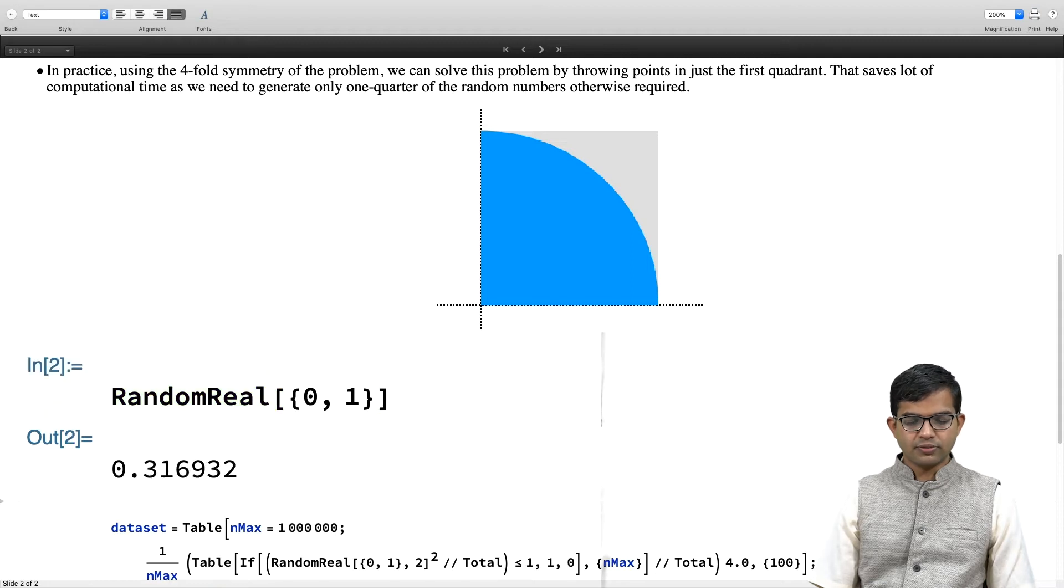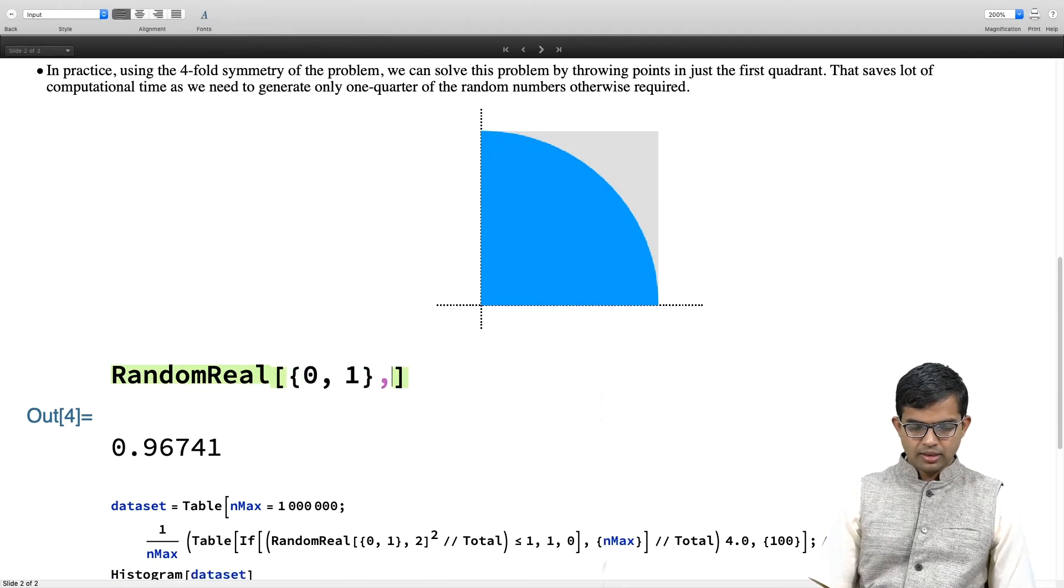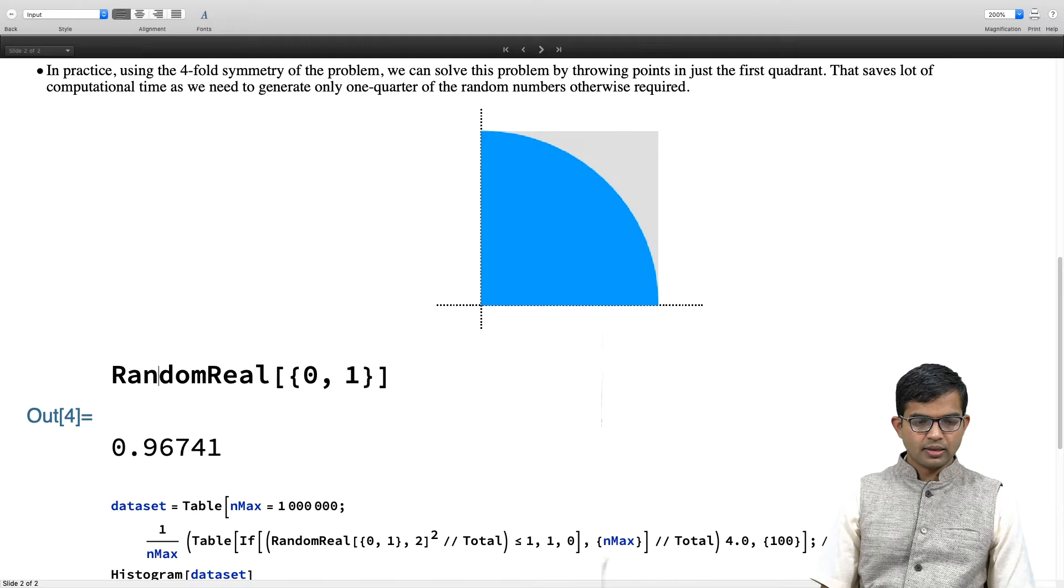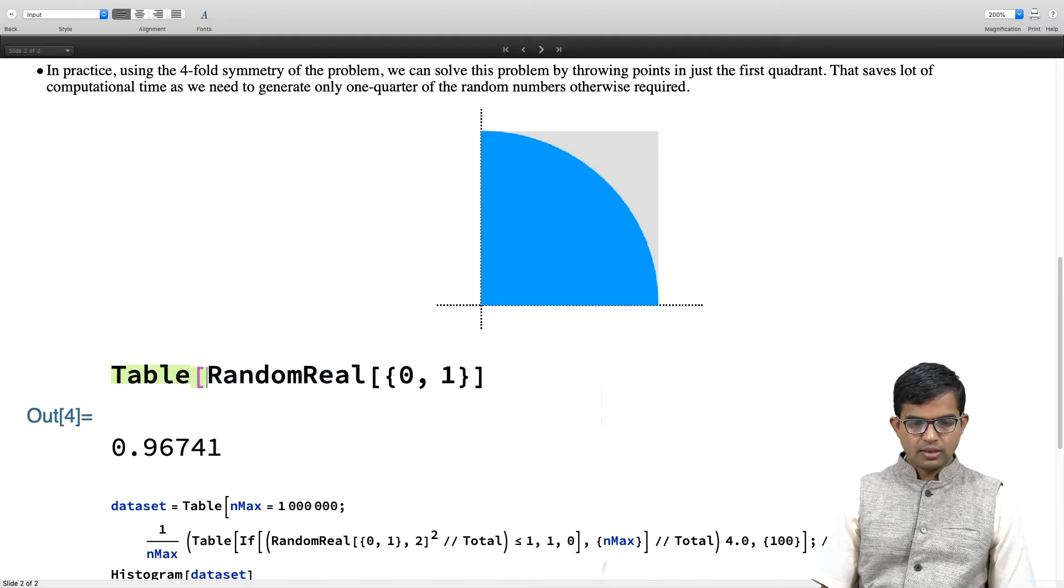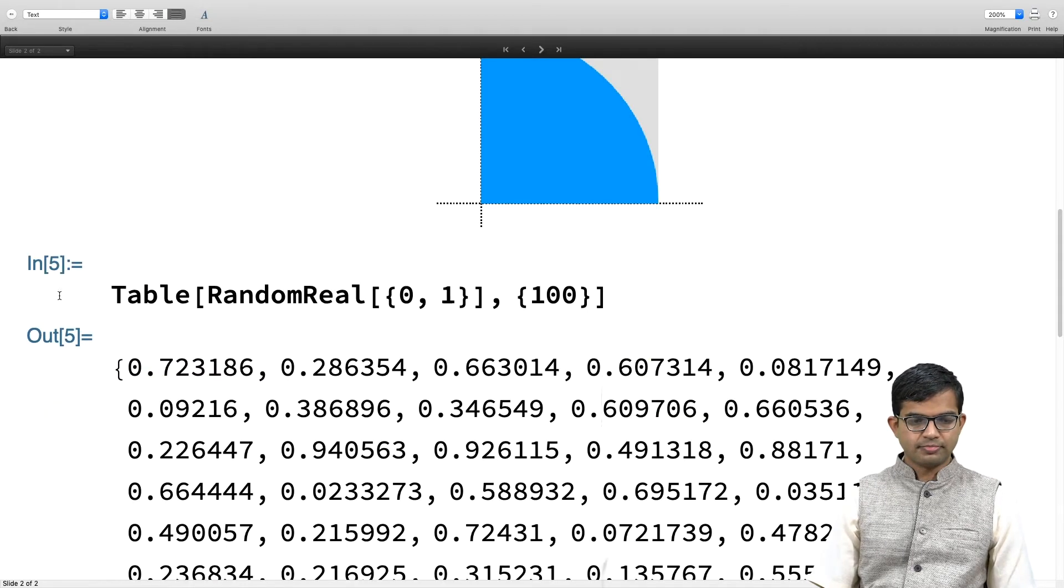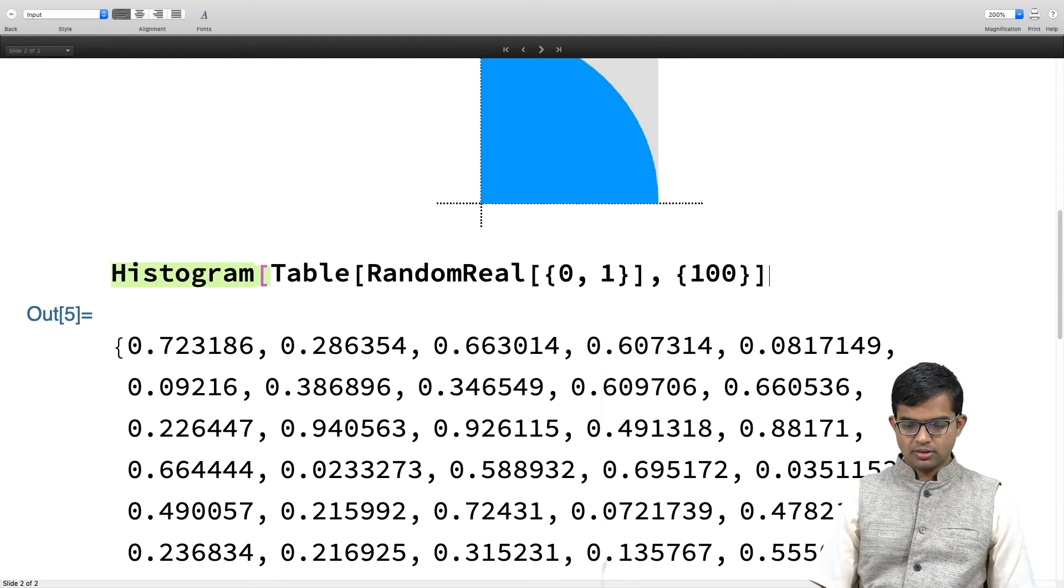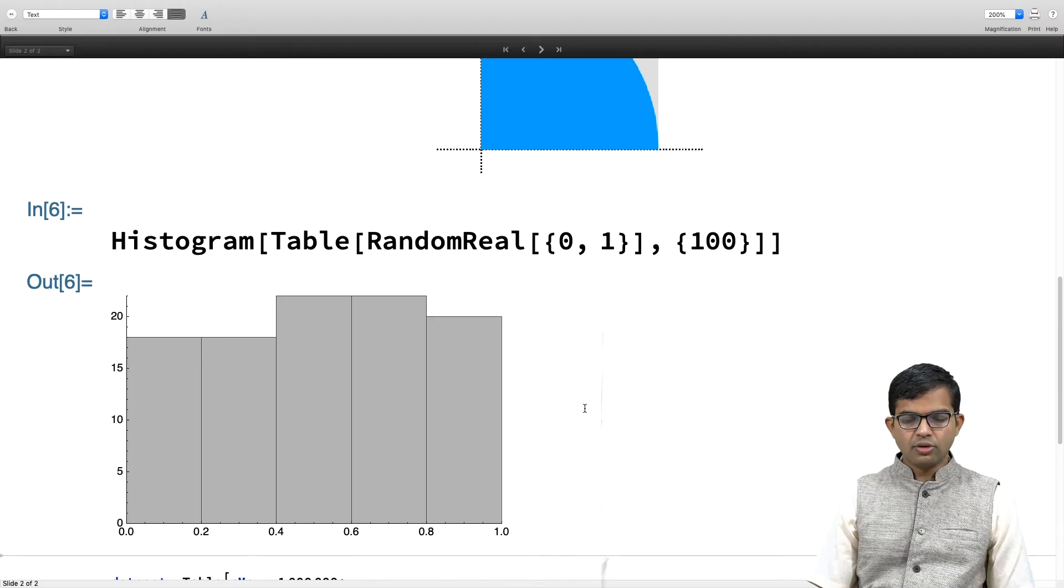I can do this in any interval. I can look at what this does if I make a table of this. A table of RandomReal, let's say I generate 100 of these and let me make a histogram of this. It is giving me a uniform distribution between 0 and 1 in this interval.